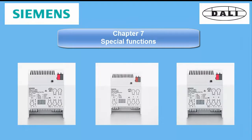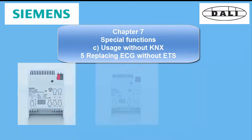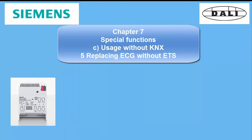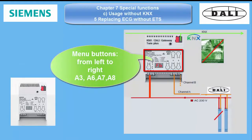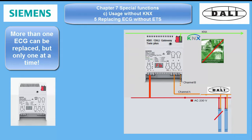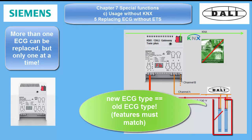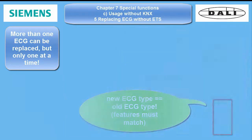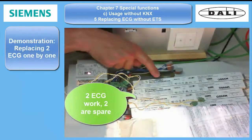Replacing ECG without ETS. The Gateway supports this mode when the front side menu buttons are pressed according to the BMA to get into the replacement mode. You can replace more than one defective ECG, but only one at a time. You have to make sure that the replacement device is identical with the defective ECG. Please see the BMA for how to do it. I demonstrate it in this short video now.